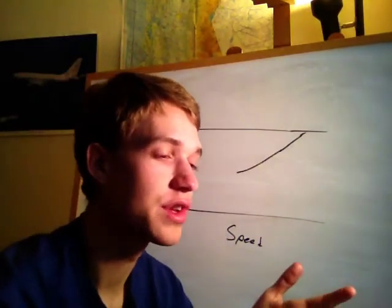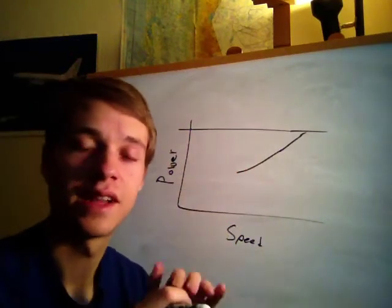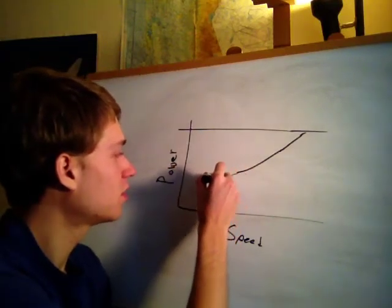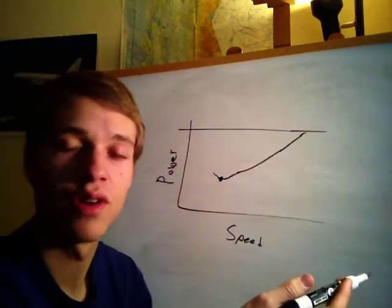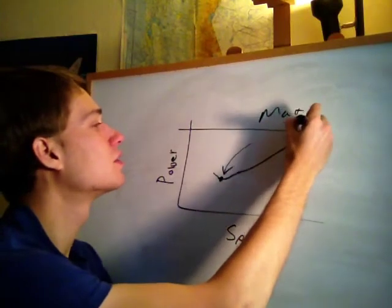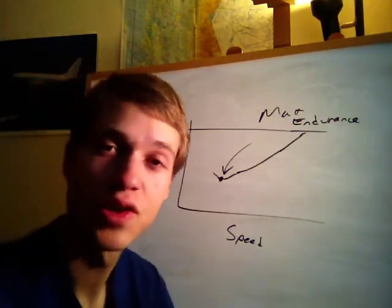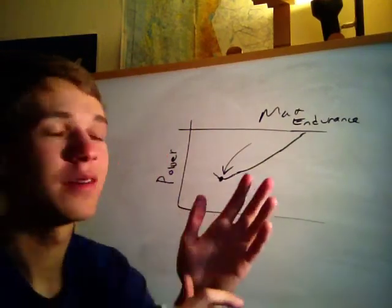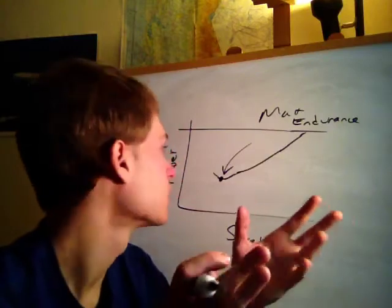If you wanted maximum endurance — the most time in the air for the fuel you have — you need to find the airspeed at which you maintain level flight using the least amount of power. That's the maximum lift-over-drag ratio, where you're producing the most lift for the least drag penalty. This gives you maximum endurance because you have the least fuel flow needed to maintain level flight, though you'll be going really slowly.